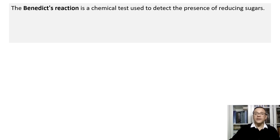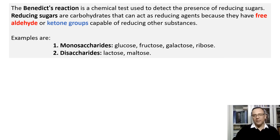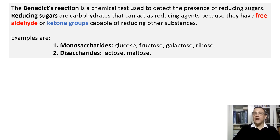Benedict's reaction is a chemical test used to detect the presence of reducing sugars. But what are reducing sugars? Reducing sugars are carbohydrates that act as reducing agents because they have free aldehyde or ketone groups capable of reducing other substances. In chemistry, to be reduced means to gain electrons or to decrease the oxidation state of an element. Examples of monosaccharides that are reducing sugars include glucose, fructose, galactose, and ribose. Examples of disaccharides include lactose and maltose.